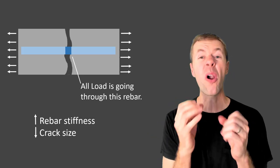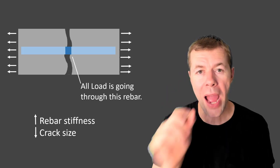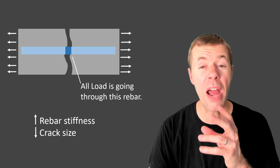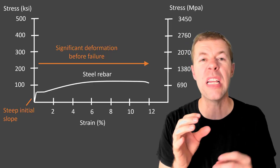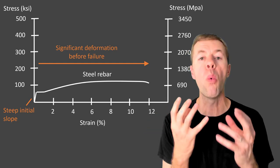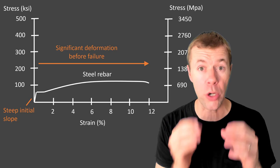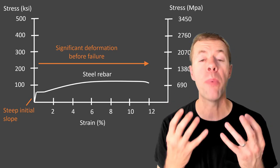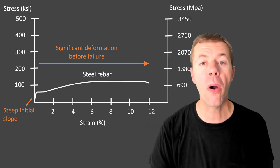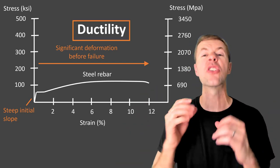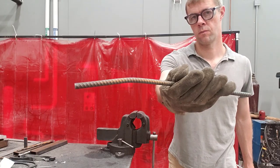So the stiffer that bar is, the harder it is to move it, the smaller the cracks will be. And this is why that initial slope is so important. Now another parameter that's important is the total deformation. And you want your bar to be able to deform a lot before failure. Why? Because that gives people warning. That allows load to be distributed to other parts of your structure. And this is called ductility and is one of the most important parameters of reinforced concrete.